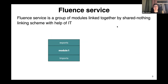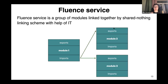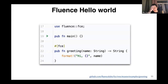A service is a group of modules linked together by a shared-nothing linking scheme with the scope of interface types. Each module inside WebAssembly can have its own imports and exports, and interface types allow you to do the shared-nothing linking scheme. This allows modules to keep their state private — by state I mean memory, tables, globals — and just link with each other by imports and exports.